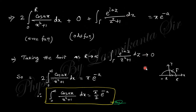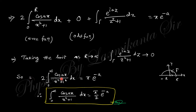Taking the limit as R → ∞, the integral over the semicircular arc γ vanishes (Jordan's lemma), since this part flattens to zero. This leaves only the real axis integral, and you obtain the final integral value.